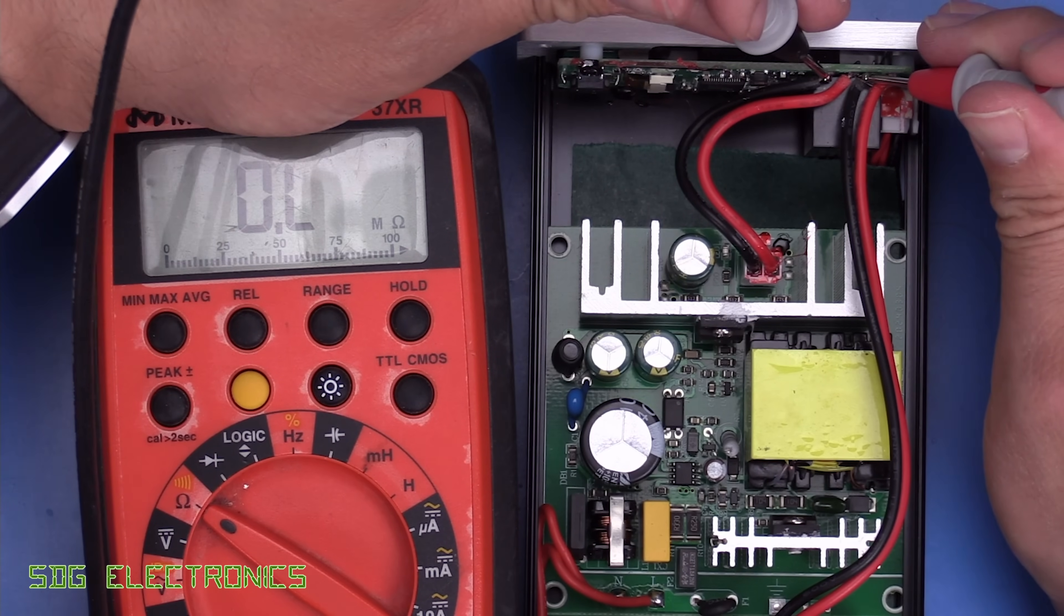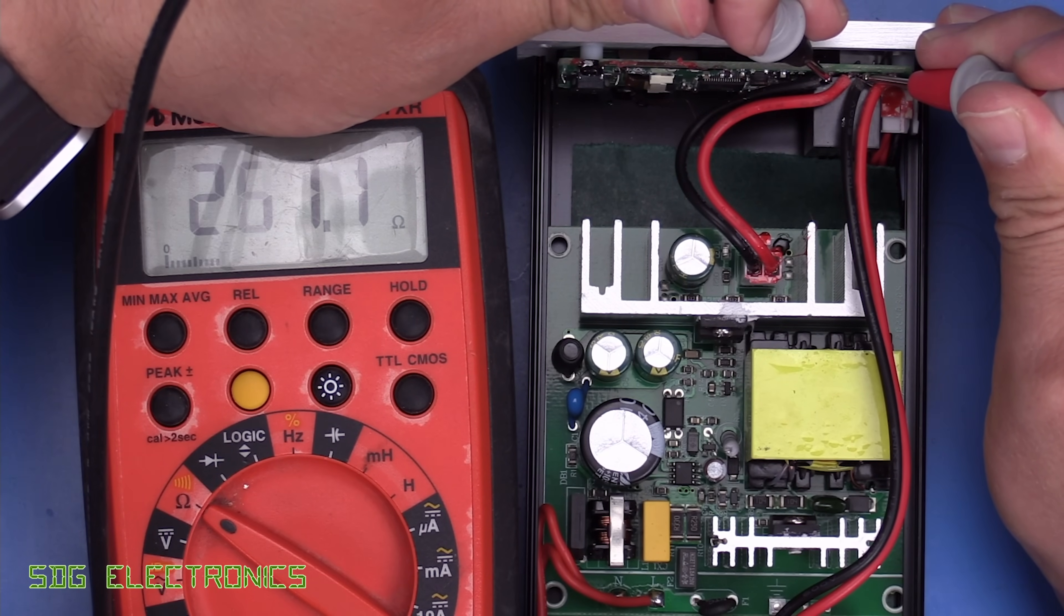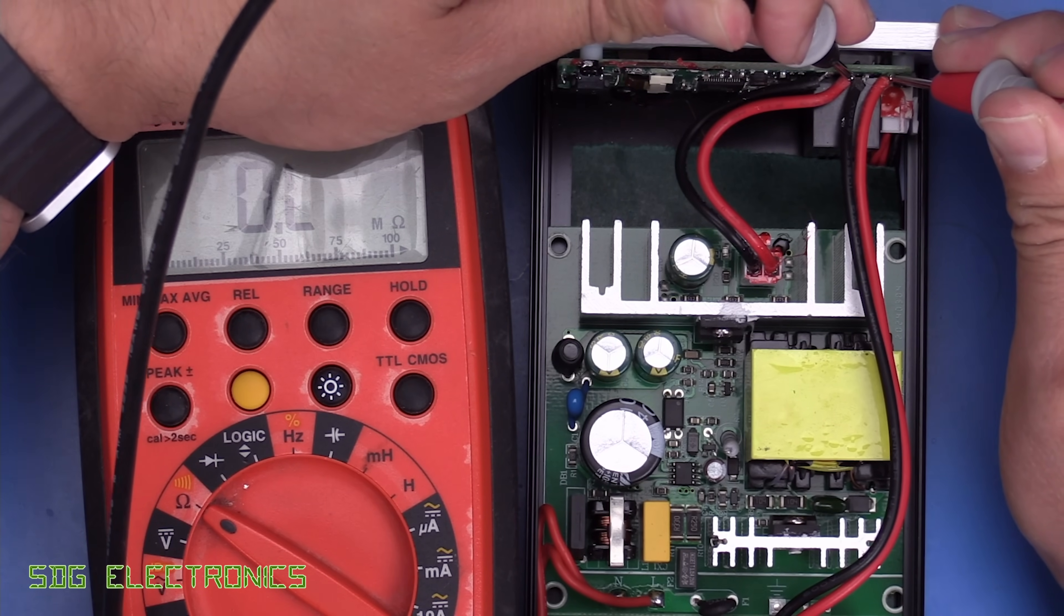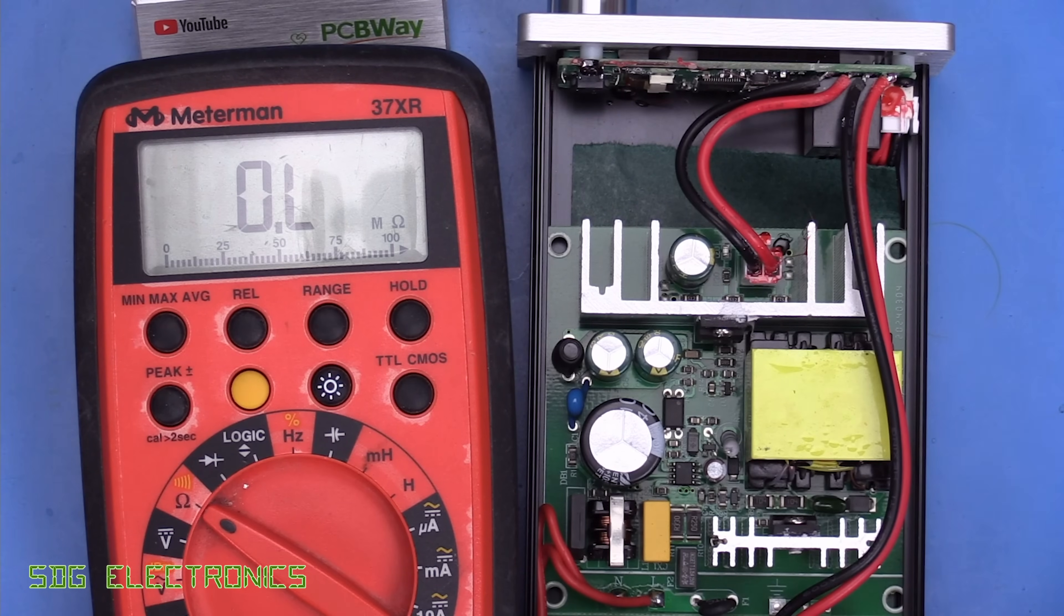And yeah, just quickly, if we test between the two power supplies, you can see that they're not paralleled up or anything like that. So it makes sense for these to be switched in and out for the two supply rails for the different types of cartridges.